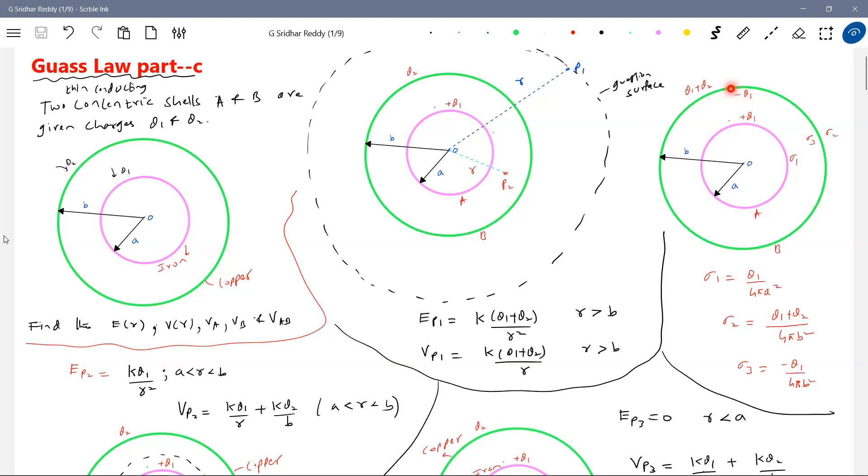This is a conductor. Now, you are going to draw a Gaussian surface in the material of shell B. Then what is the net field inside the conductor? Should be zero. I am exploring this one. These are very fundamental things where student was supposed to analyze. Okay, that one. So this is wrong.